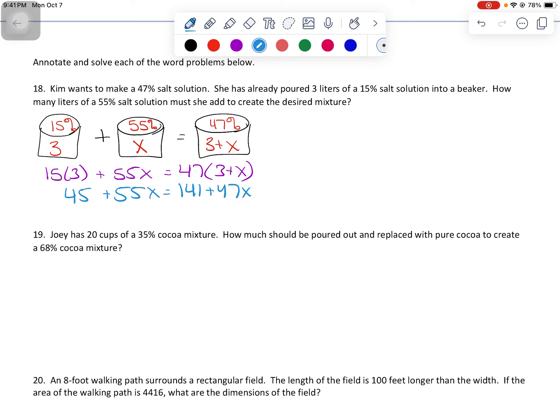I'm going to subtract 45. I'm going to subtract 47x. So 55 minus 47 gets me 8x. And 141 minus 45 gets me 96. Dividing by 8 gets me an even answer of 12. This whole thing was in liters. So make sure you give your answer unit. So 12 liters there for number 18.